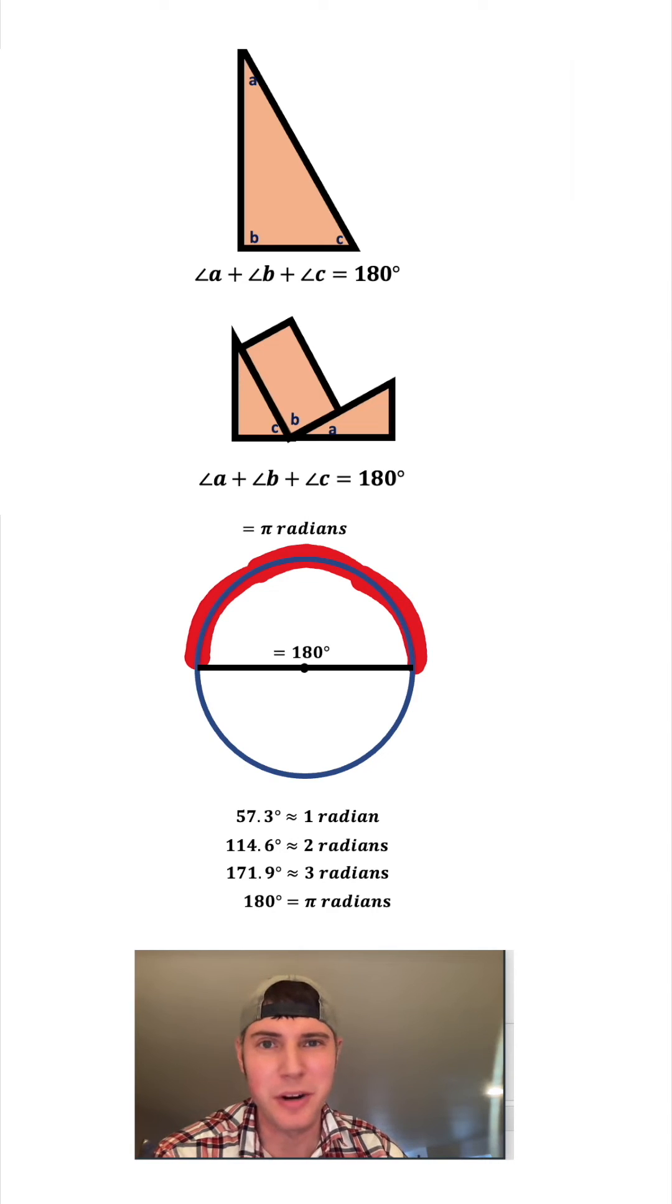Since we know 180 degrees is the same thing as pi radians, we can just conclude that each of these is pi radians. So the sum of the interior angles of a triangle is pi radians. And this is where it comes from.